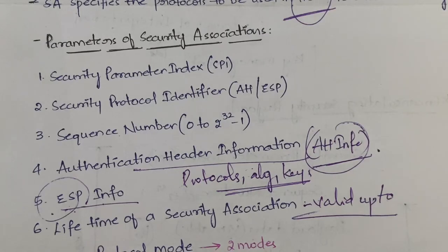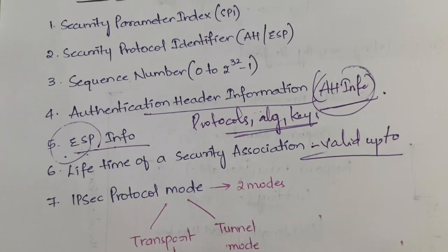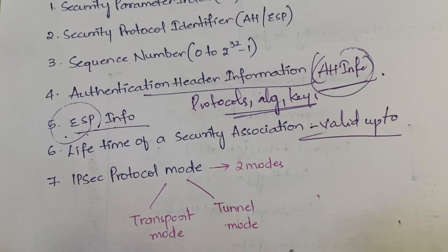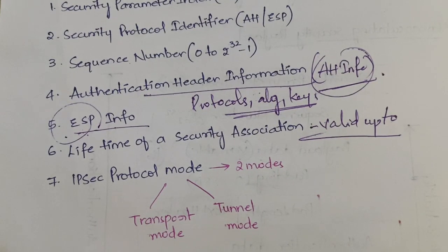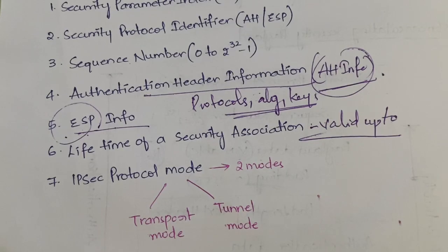Next comes the important one — the IPSec Protocol Mode. In IP security protocol modes, we have two modes: one is the Tunnel Mode and the other is the Transport Mode. Which mode is being used will also be specified in the parameters of the security association.